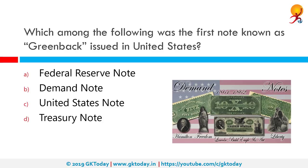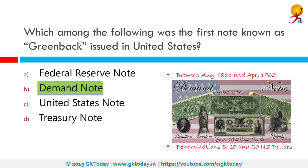Which among the following was the first note known as a Greenback issued in the United States? The correct answer is the demand note. A demand note is a type of United States paper money issued between August 1861 and April 1862 during the American Civil War, in denominations of $5, $10 and $20. Because of the distinctive green ink on their reverse, these notes started to be called Greenbacks — a name later inherited by legal tender and Federal Reserve notes as well.